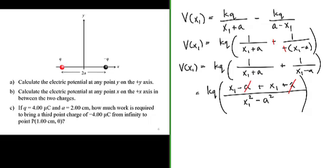The a's cancel out, and we now have an expression for the position x₁ on the x-axis as being equal to 2kq x₁ over x₁ squared minus a squared.